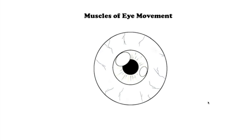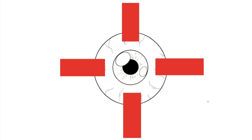Hi everyone, it's Schematic Med and today we are going to talk about muscles of eye movement. There are six muscles involved in the control of the eyeball itself. They can be divided into two groups: the four recti muscles and the two oblique muscles.